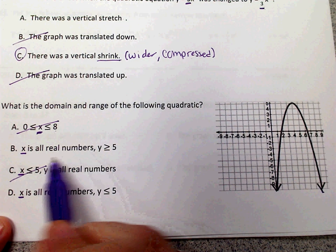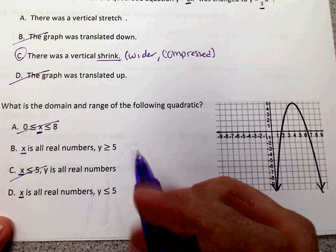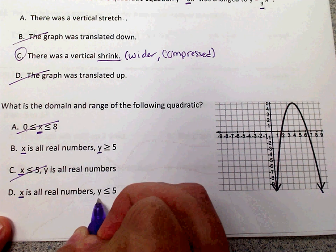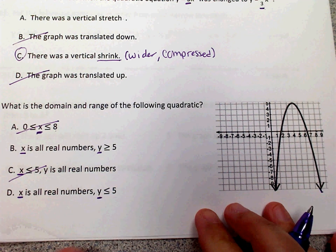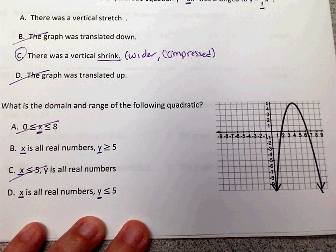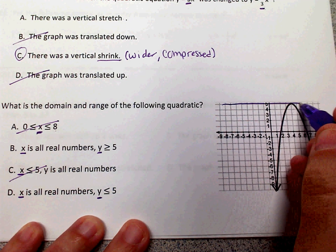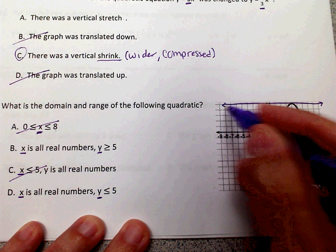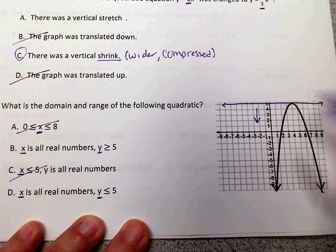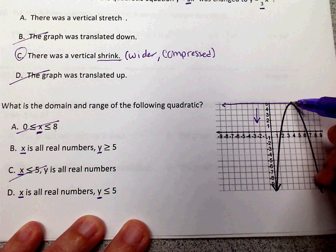Now you'll notice there's a comma and then you have your y values. So your y values are your range. If you find the highest or lowest point on the graph, here's the highest point way up here, and your graph is going down. It's underneath that, underneath your vertex.